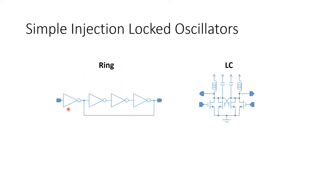If the injecting signal is strong enough, the circuit will lock to the injecting input. The output will have many of the characteristics of the input — it will have its frequency and it will have a phase that's related to the phase of the input.